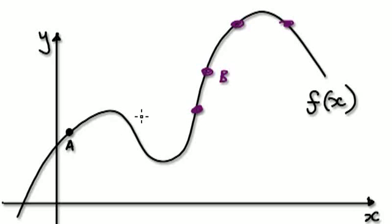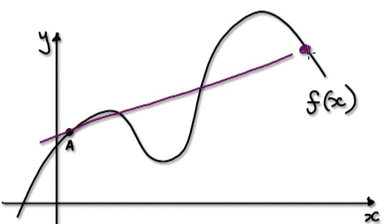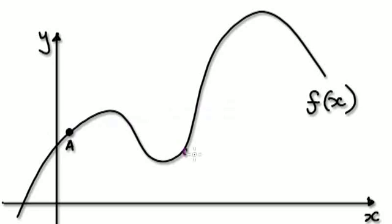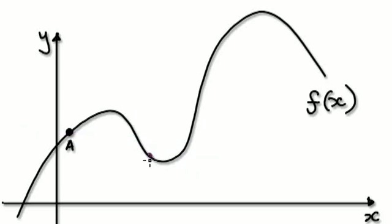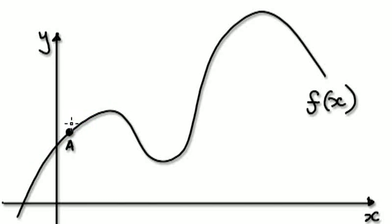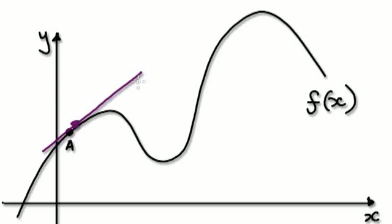Originally B was here, so you draw a straight line. Then move B over here and draw a straight line. That's still not quite right. Move B closer, draw a straight line — get B to move towards a. And eventually, as you get B closer and closer to a, it gives you a more precise definition of a tangent line. The tangent line is the limit as B approaches a.